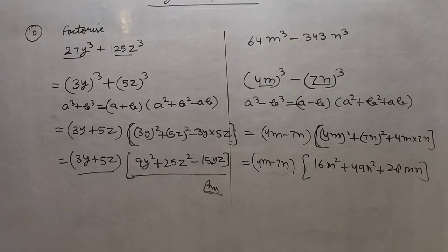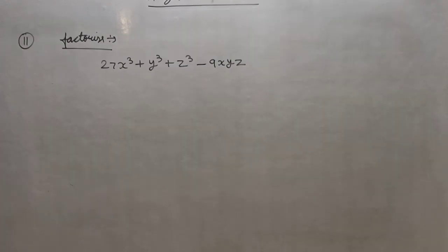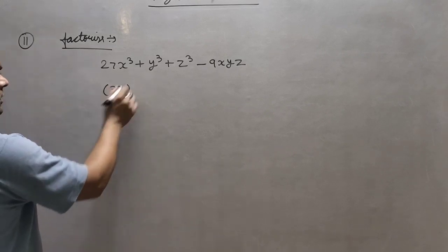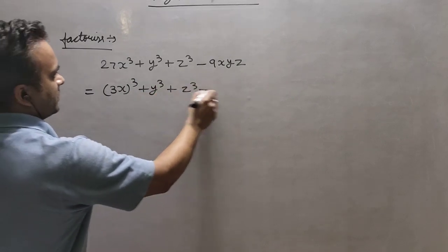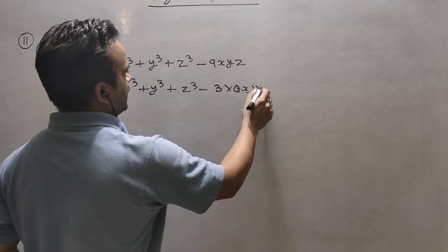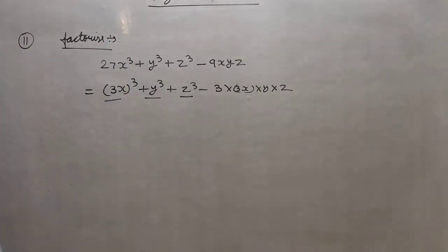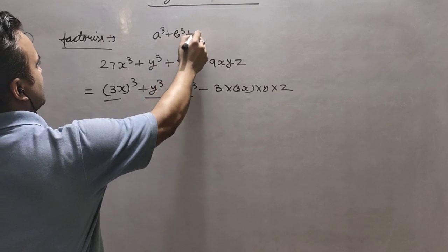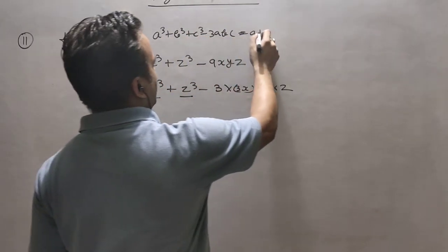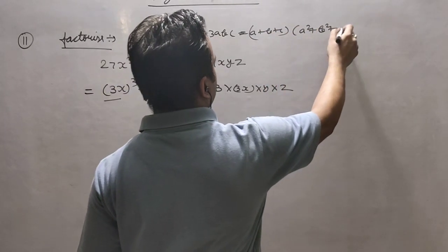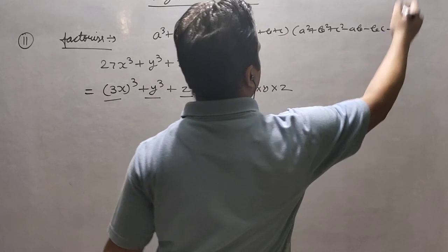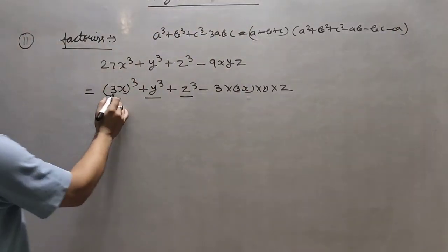Now question number 11. Here we have to factorize. We have to see which identity to use. You can see this is — if I write it in complete cube form — it is 3 · (3x) · y · z, so it is related to a³ + b³ + c³ - 3abc. The identity is: a³ + b³ + c³ - 3abc = (a + b + c)(a² + b² + c² - ab - bc - ca).